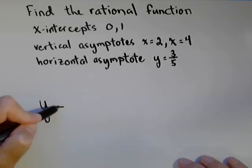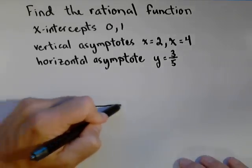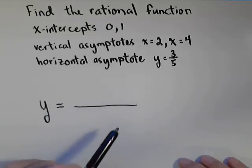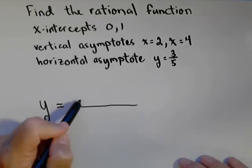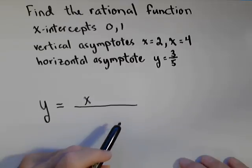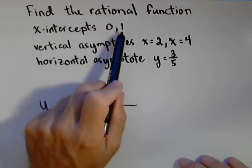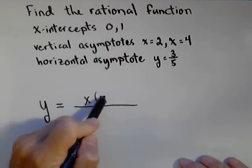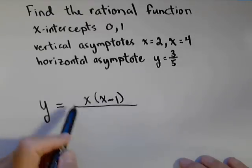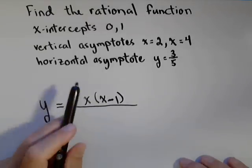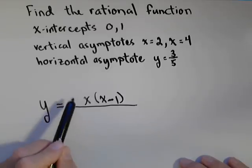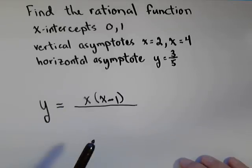So what we're gonna do is use this information to build our rational function. First off, if we have an x-intercept at zero, that means x has to be a factor of the numerator. If we have an x-intercept at one, that means our other factor must be x minus one. There could be other factors, there might be a constant in there. Based on the information we've given, if these are the only two, actually no other factors, but there could be a constant in front. We'll talk about that in a second.